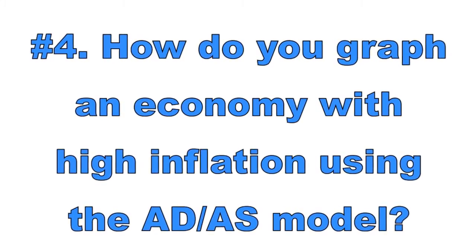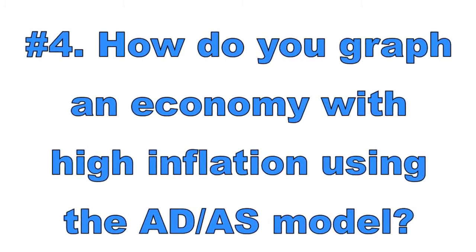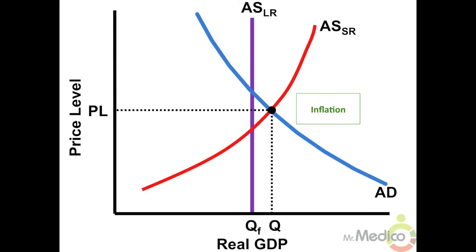Number four: how do you graph an economy with high inflation using the ADAS model? To graph high inflation in the short run, the SRAS and AD curves should intersect to the right of the LRAS curve. Demand-pull inflation occurs when the AD curve shifts to the right, caused by an increase in consumer spending, investment spending, government spending, and/or net export spending.